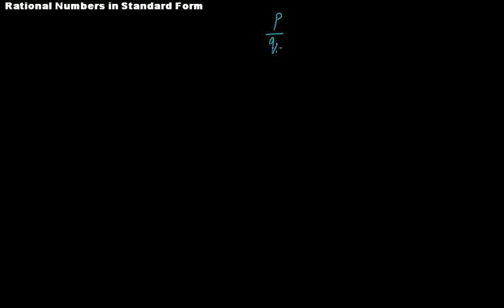In this video tutorial we learn about the standard form of a rational number. Any rational number, let's say p over q, will be said to be in its standard form when the denominator q is positive and p and q — the numerator and denominator — have only one common factor.